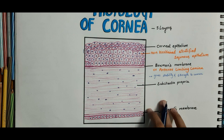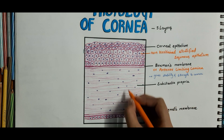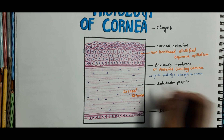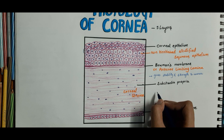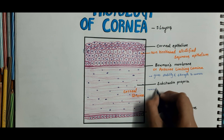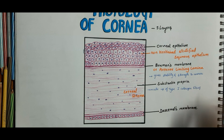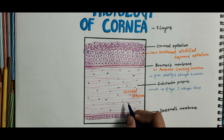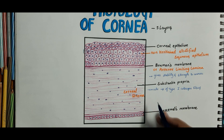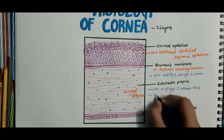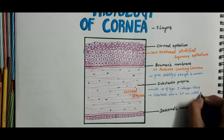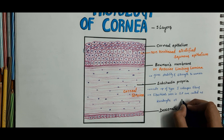The third layer, the corneal stroma, is formed by the substantia propria. The substantia propria or corneal stroma is made up of type 1 collagen fibers embedded in the ground substance. Fibroblasts are present in the substantia propria — they appear flattened but are seen as star-shaped. The fibroblasts in the substantia propria are also called keratocytes or corneal corpuscles.